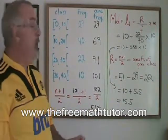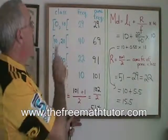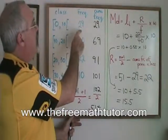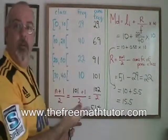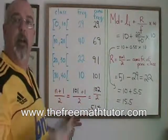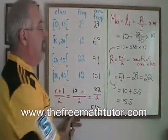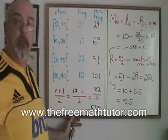Now this has to be an estimate because we don't actually know the data here. We don't know exactly how many of these couples, for instance, were married for two years and how many were married for three. So this formula by necessity is an estimate of the median. Still, for class data, this is how to find our median and this time it is 15.5.